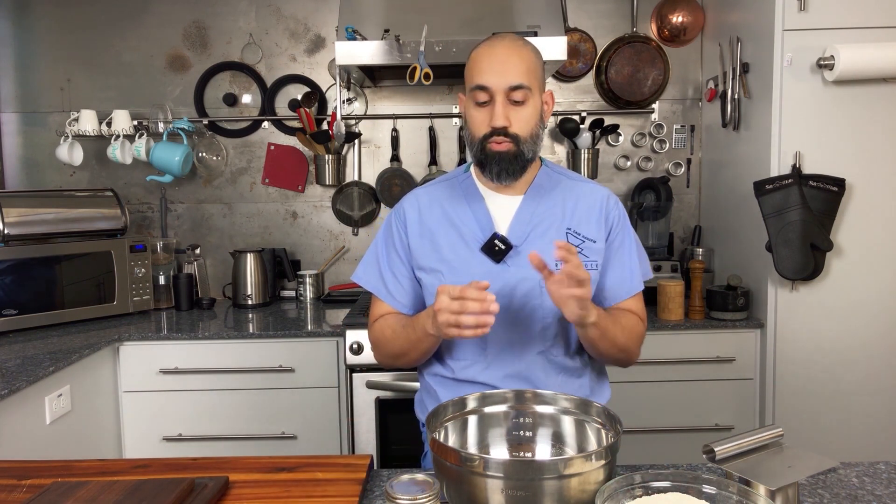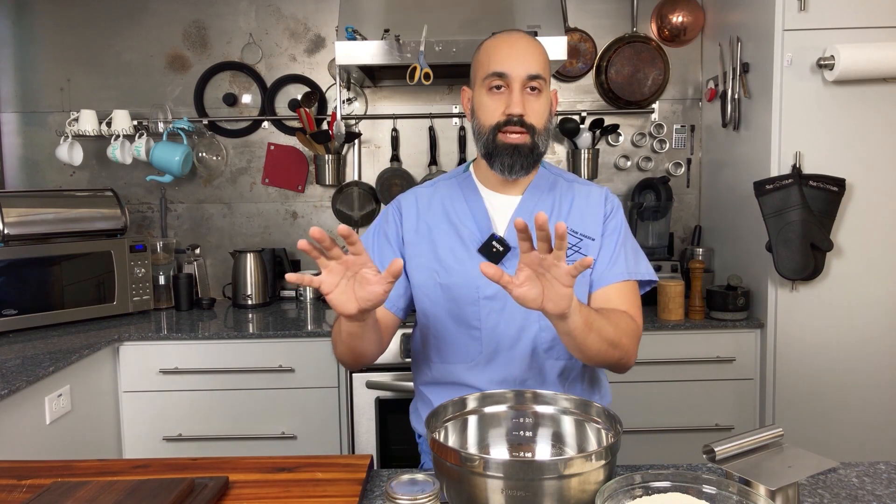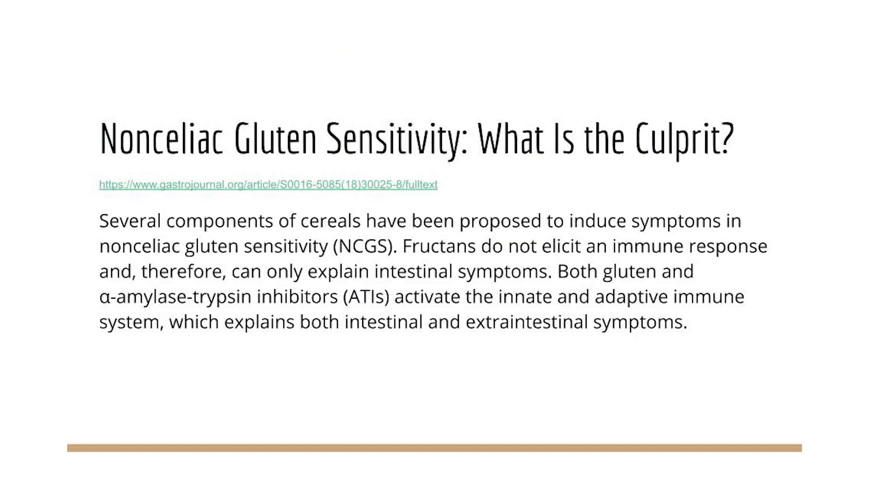These are called amylase trypsin inhibitors, or ATIs. Importantly, only the B and D genomes are capable of producing these ATIs — the A genome is not. So einkorn wheat has none of these substances. Only emmer, durum, kamut, and modern wheats including spelt are capable of producing them. These ATIs actually produce a similar inflammatory reaction to what we see in celiac disease — so even without an antibody to gluten, the way you have in celiac, these ATIs can trigger a similar cascade of inflammatory reactions.